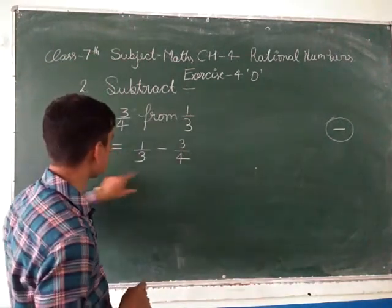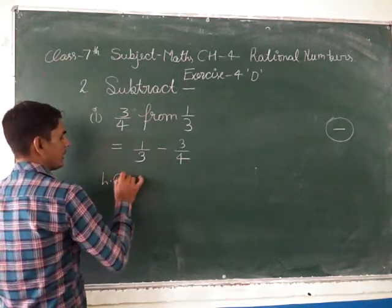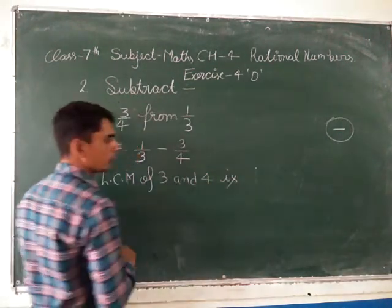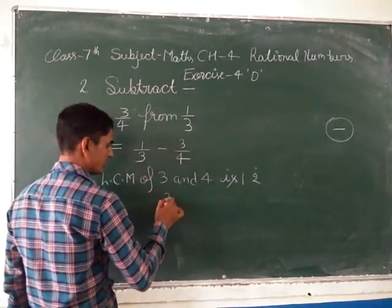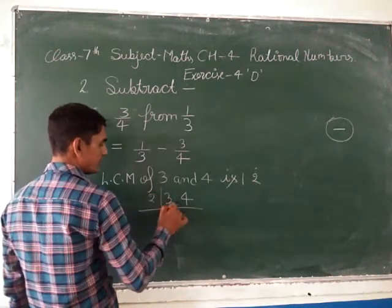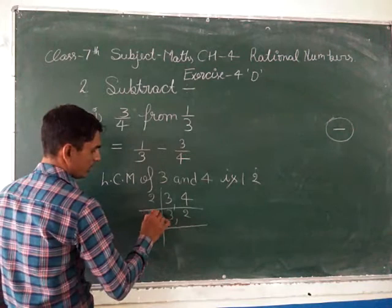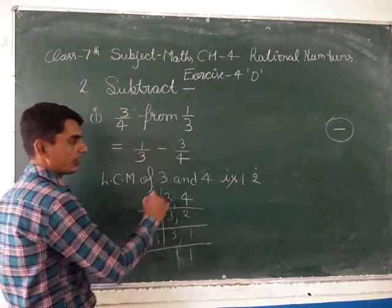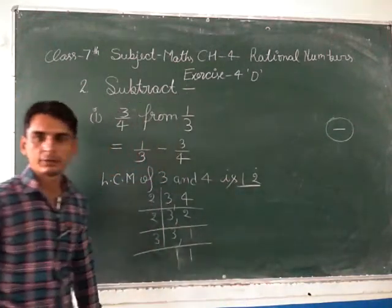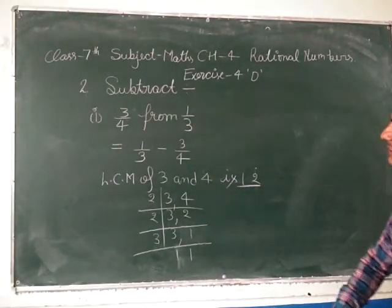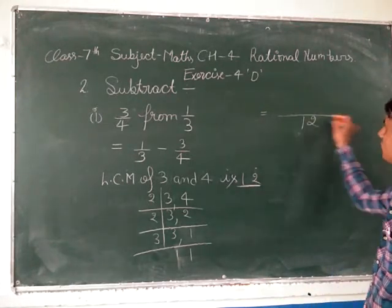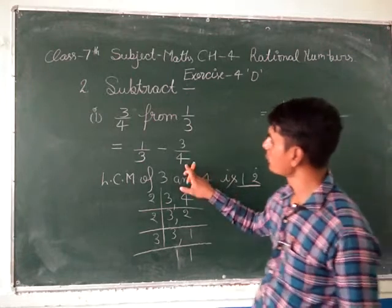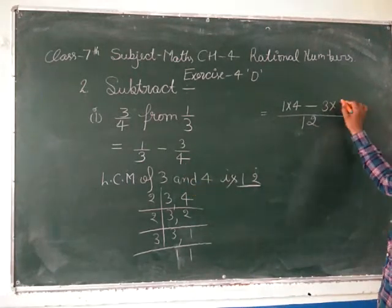The denominators are not the same, so we find the LCM of 3 and 4. LCM of 3 and 4 is 12. So we have 12 as the common denominator. Multiply: 1 times 4 is 4, and 3 times 3 is 9. So we get 4 minus 9 upon 12, which gives us minus 5 upon 12 as the required answer.